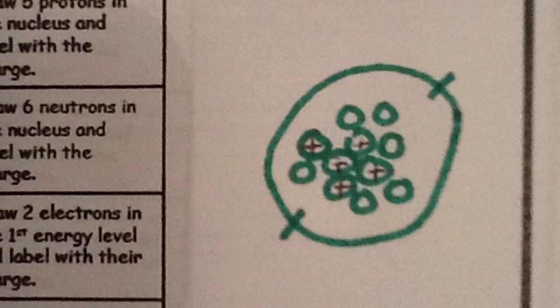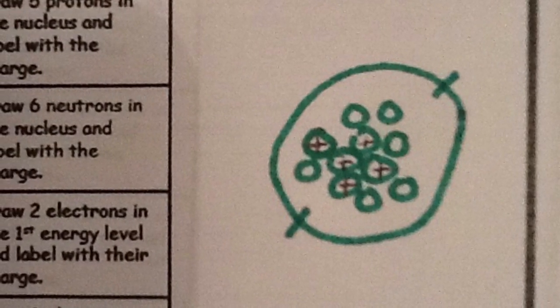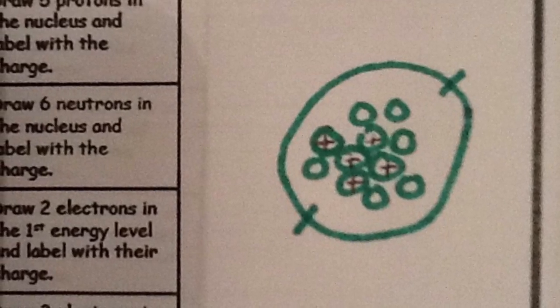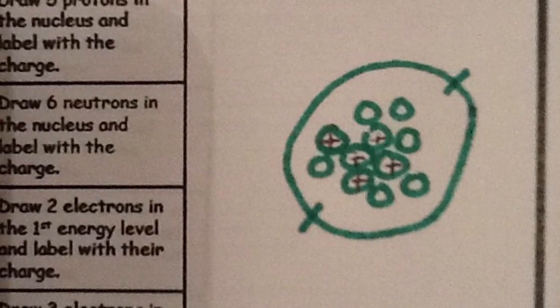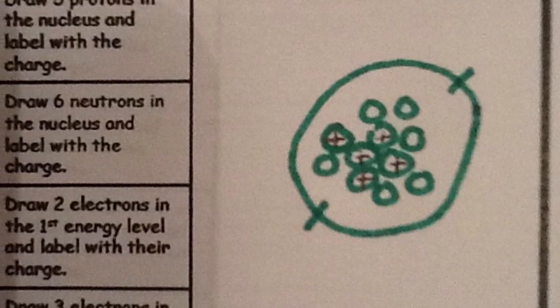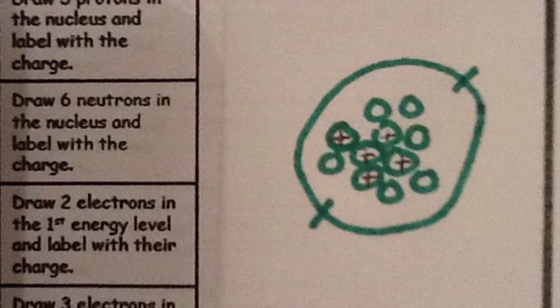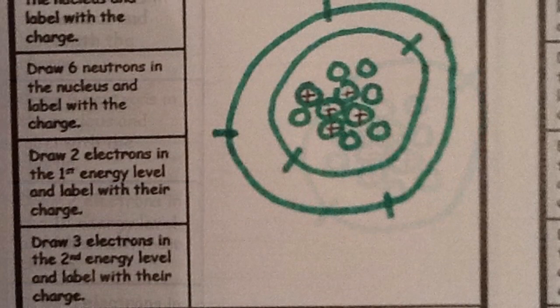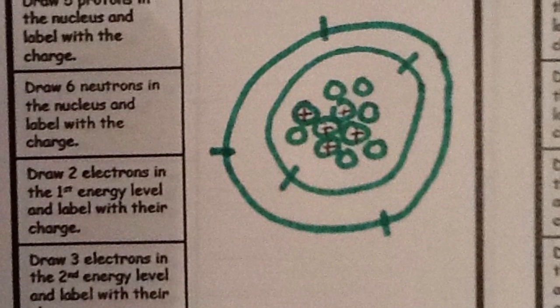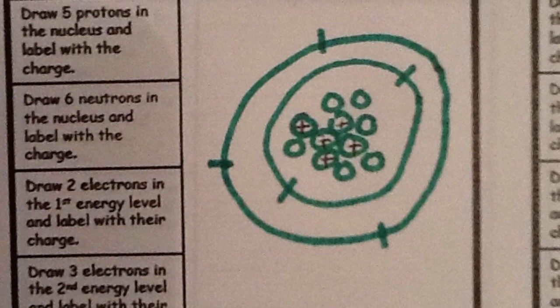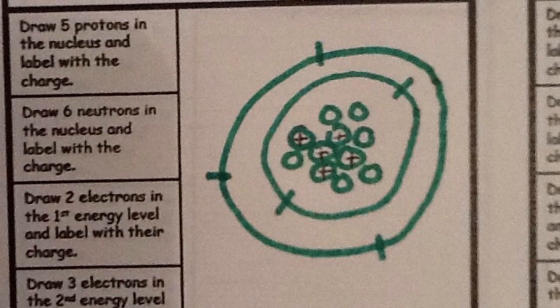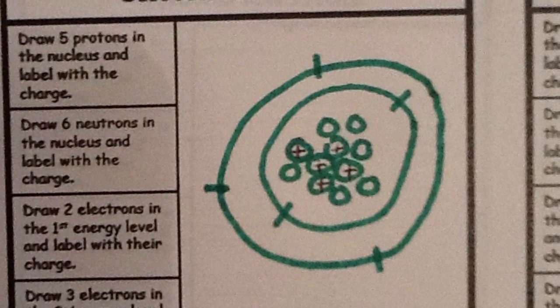Now for the electrons. The first energy level can hold two electrons. So I've drawn the first energy level and drawn two negative signs because the electrons carry a negative charge. The second energy level can hold up to eight electrons, but we only need three for this particular element, so three more negative signs completes this atom.